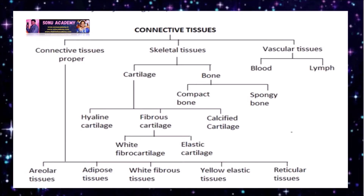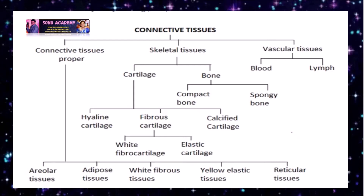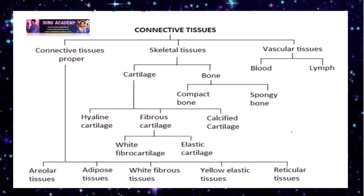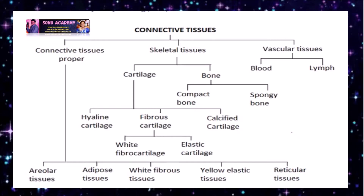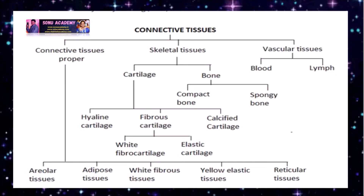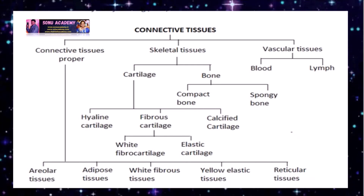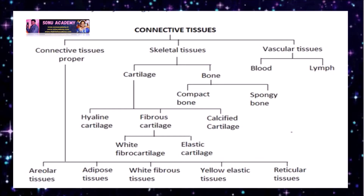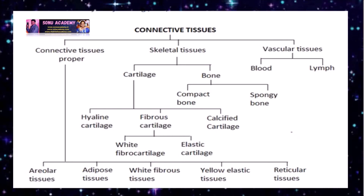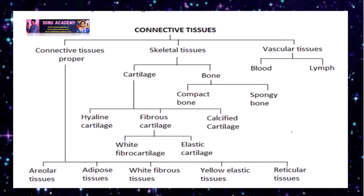Connective tissue is mainly divided into three types: connective tissues proper, skeletal tissues and vascular tissue. Connective tissues proper includes areolar, adipose, white fibrous, yellow elastic and reticular tissues. Skeletal tissues include cartilage and bone; cartilage is further classified into hyaline, fibrous and elastic types, while bone includes compact bone and spongy bone. Vascular tissues are blood and lymph.